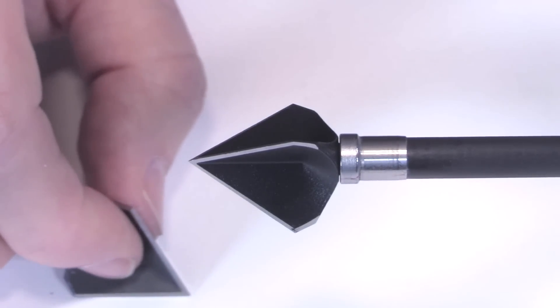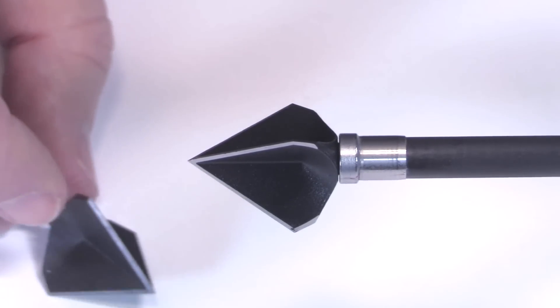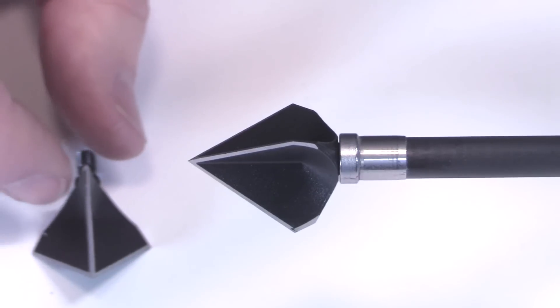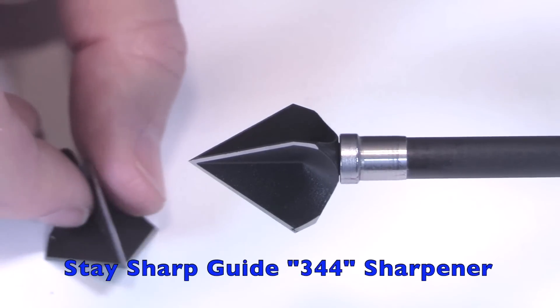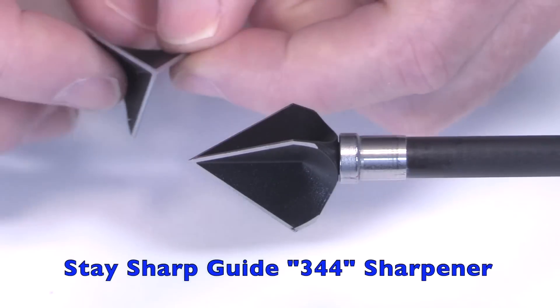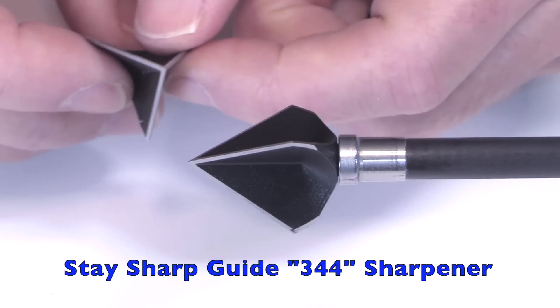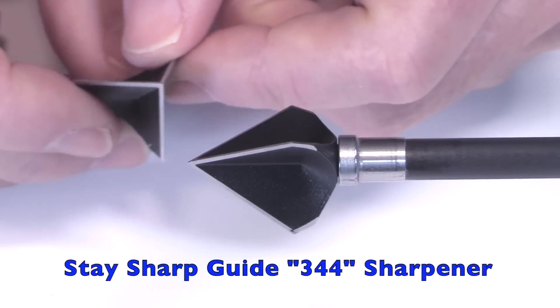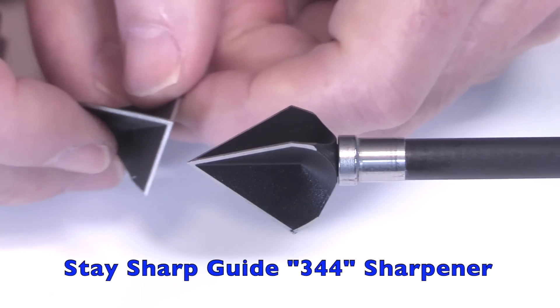And if you want to get it even extra sharp, then you can get a Stay Sharp Guide 344 sharpener, which in essence, what it does is it changes the bevel angle from 60 degrees to 44 degrees. And it doesn't take away very much, not even a noticeable amount at all, of the weight of the broadhead.